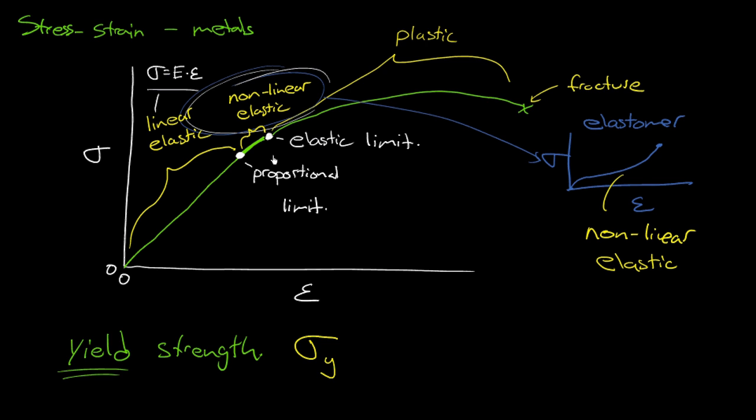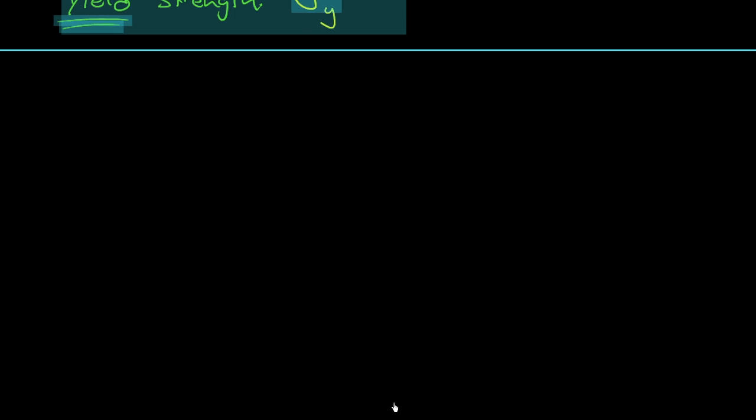All right. So we're going back to this issue of, OK, the proportional limit is just a definite end of the straight line. That's fine. But where are we going to really determine or decide on the onset of plastic or permanent deformation? So let's see. Let me scroll here a little bit. Okay. Sorry. Here we go. Add a bit of space. OK.